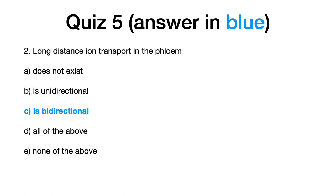Two, long distance ion transport in the xylem, the correct answer is C, it's bidirectional.